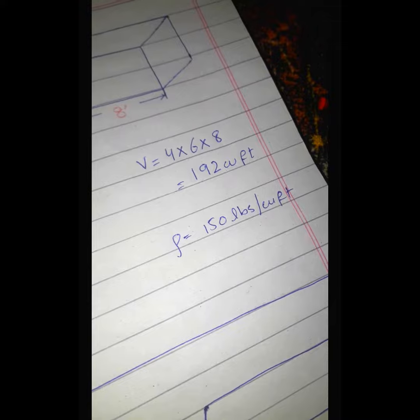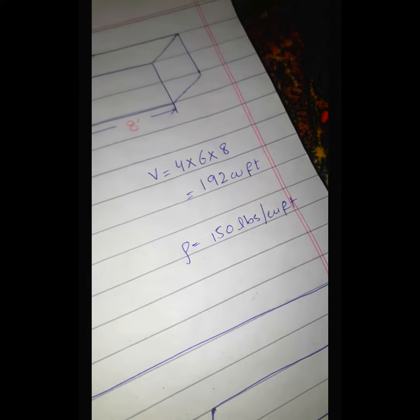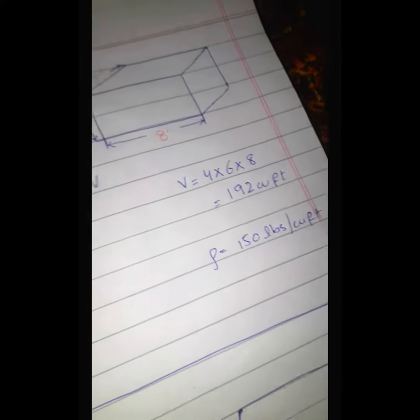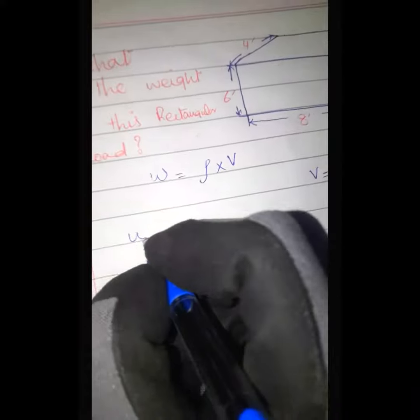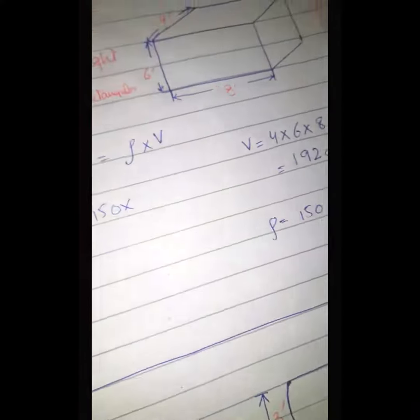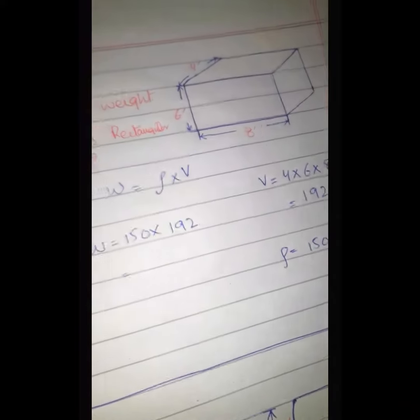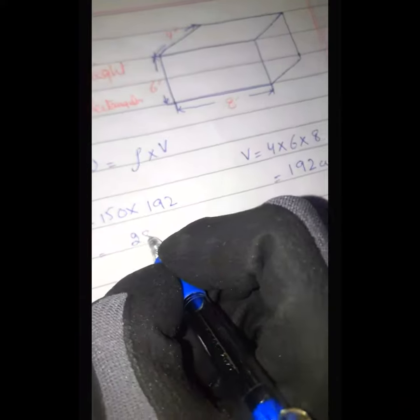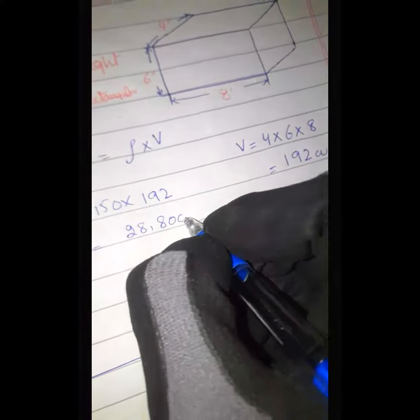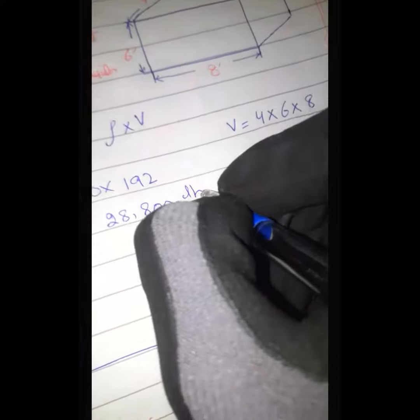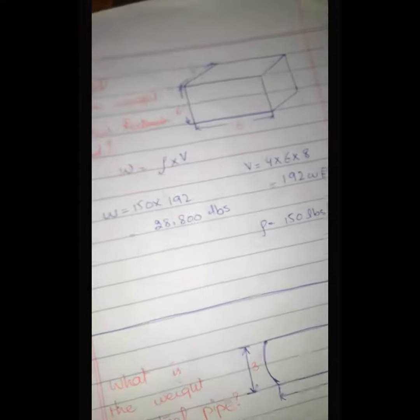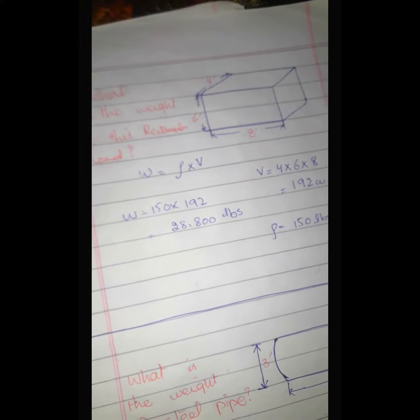So weight is equal to density is 150 and volume is 192 units, then it is equal to 28,800 lbs. So the first step is to find the weight of the concrete block.